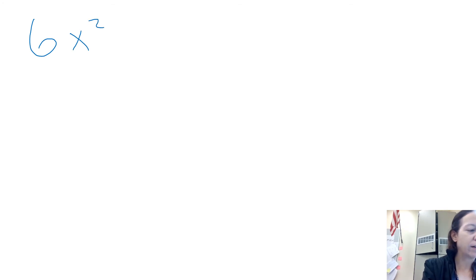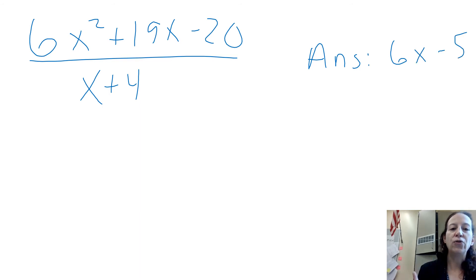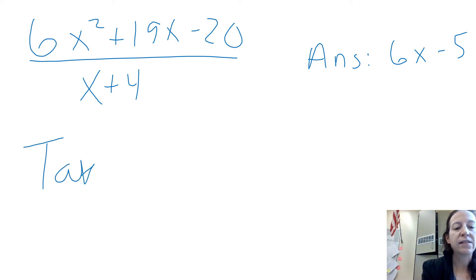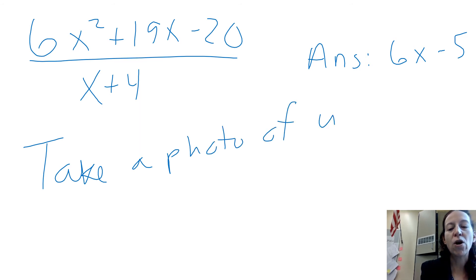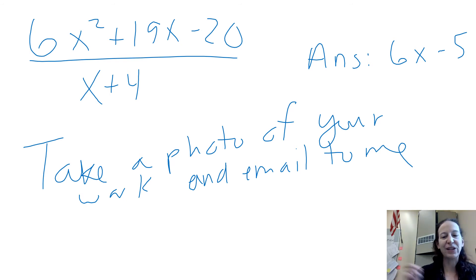At this point in the lesson, there's a pause for you to do one on your own. If you're doing this video at home, stop the video and actually try to work it out. The answer you're going for is 6x minus 5, so you can check your work. If you don't get 6x minus 5, take a photo of your work and email it to me or post it on Teams, and I'll look over your work and help you figure out what went wrong.